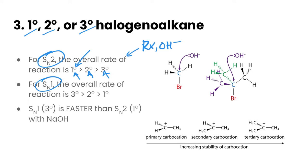For SN1, the overall rate of reaction reverses. Tertiary is fastest, followed by secondary, and then followed by primary. This is dependent on the stability of the carbocation that is produced in the first or the rate determining step of the mechanism. Essentially, the more alkyl groups that are present that are attached to that carbon or the carbocation is going to make it more stable. So tertiary is more stable.